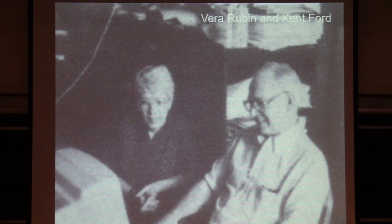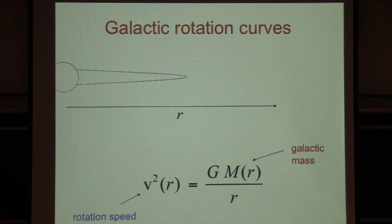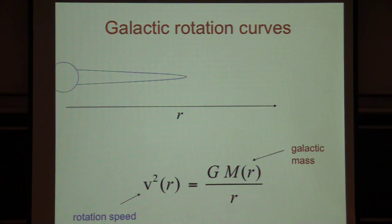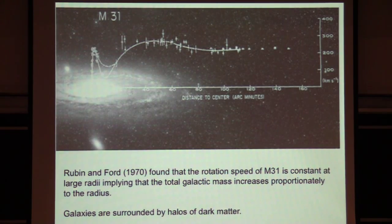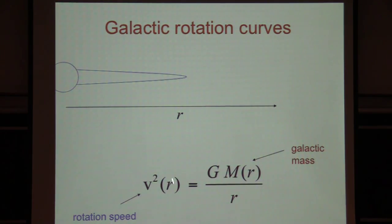For roughly 40 years the subject remained dormant, until Vera Rubin and Kent Ford measured galactic rotation curves. For a galaxy viewed edge-on, you measure the velocity of gas going around the galaxy, which gives a measure of the mass inside by balancing centrifugal acceleration and gravity. If the mass were constant, the velocity would fall off like 1 over the square root of r, but instead they found the velocity is constant — for example in M31, Andromeda — implying the galaxy is surrounded by a halo with mass increasing like the size, so the density falls off like 1 over r squared.